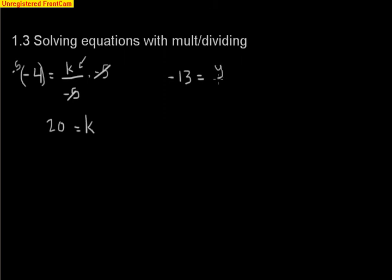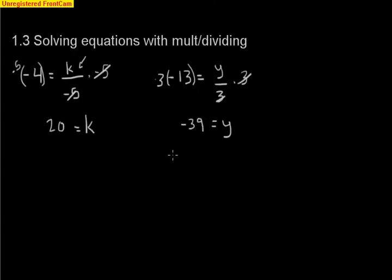A very similar example: negative 13 equals y divided by 3. What's happening to y? We're dividing by 3. So multiply both sides by 3 — the 3s cancel — and y equals 3 times negative 13, which winds up being negative 39. Those are two examples where you have to multiply both sides of the equation to get your answer.